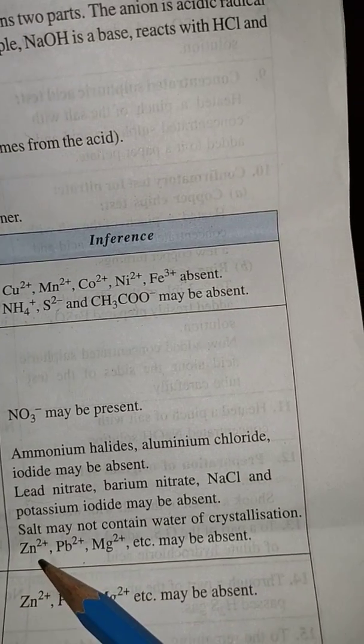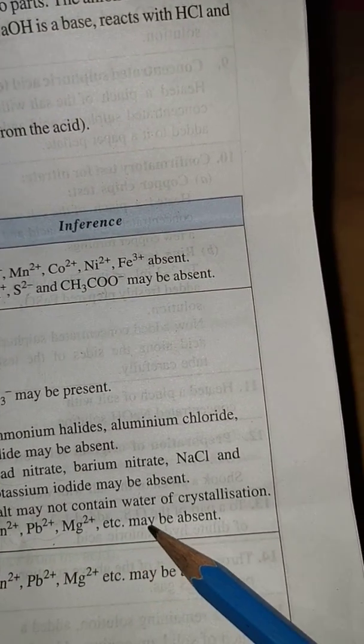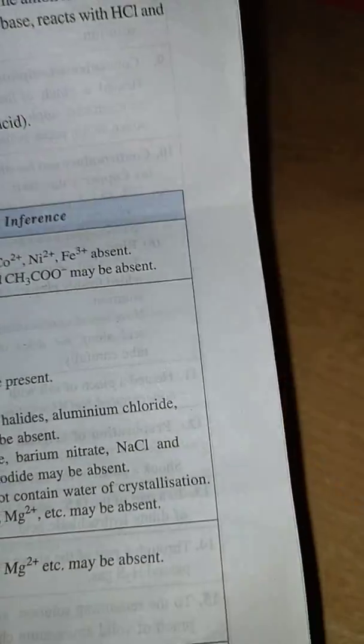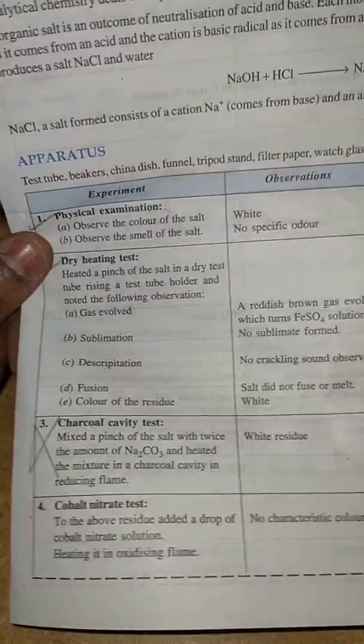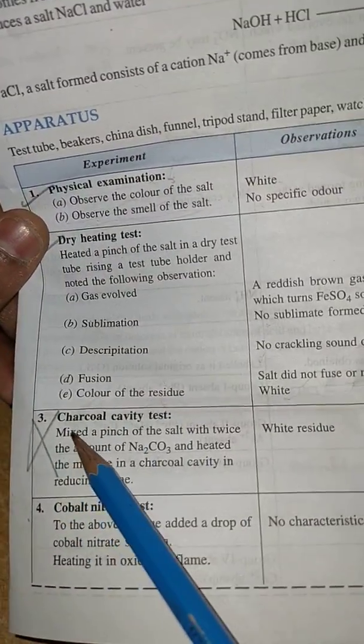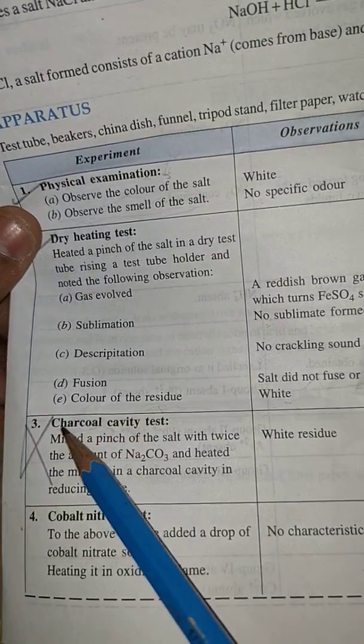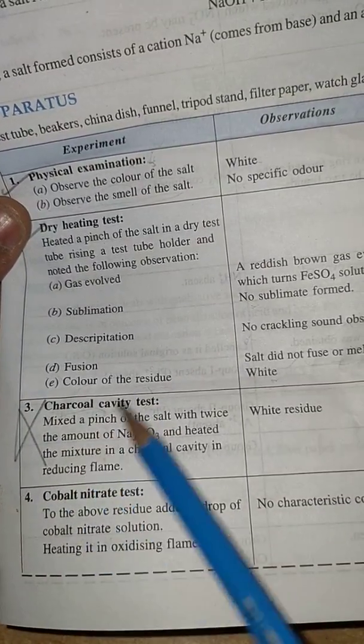So it may be Zn²⁺, Pb²⁺, Mg²⁺ etc may be absent. The next activity you will not do in the lab manual is the charcoal cavity test.